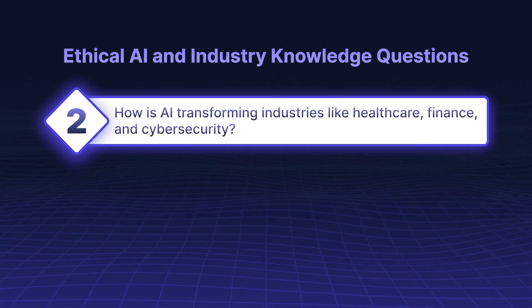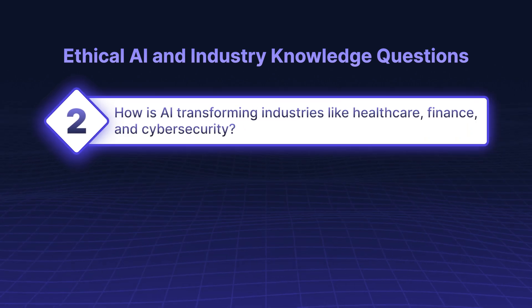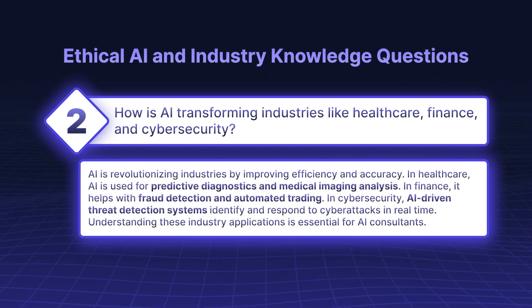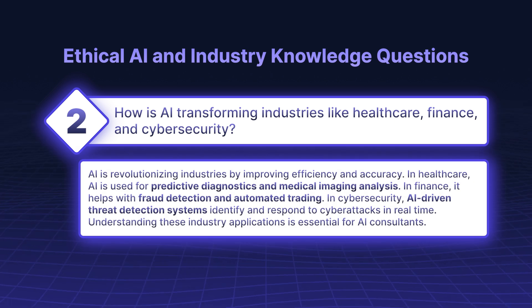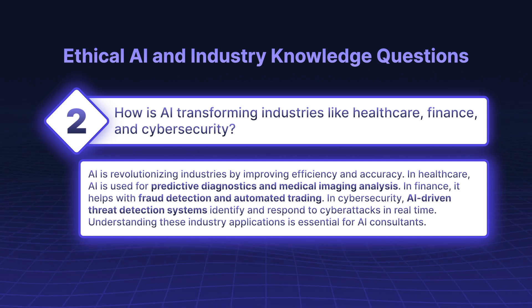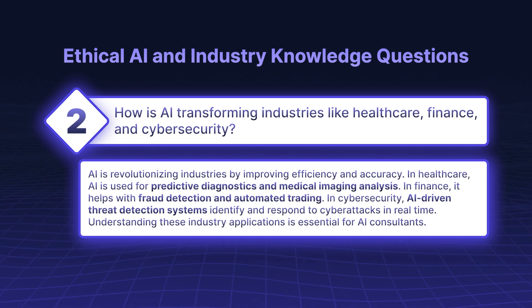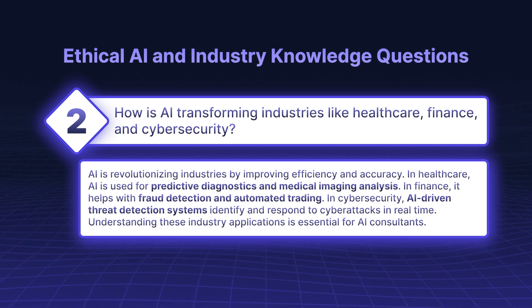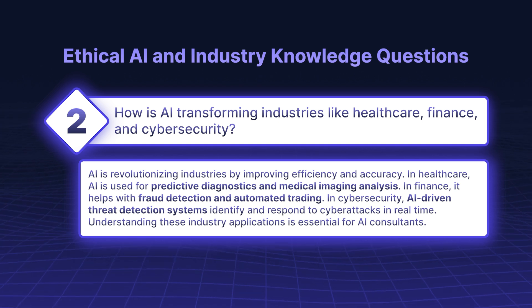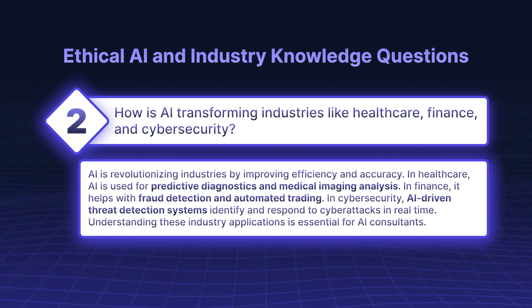How is AI transforming industries like healthcare, finance, and cybersecurity? AI is revolutionizing industries by improving efficiency and accuracy. In healthcare, AI is used for predictive diagnostics and medical imaging analysis. In finance, it helps with fraud detection and automated trading. In cybersecurity, AI-driven threat detection systems identify and respond to cyberattacks in real time. Understanding these industry applications is essential for AI consultants.